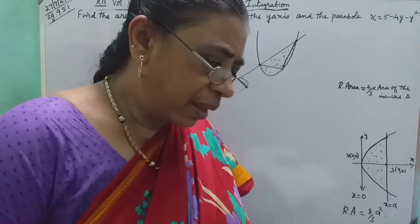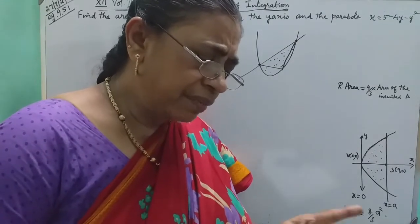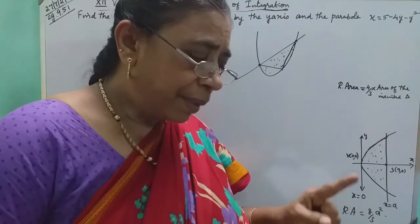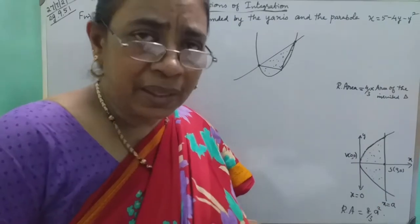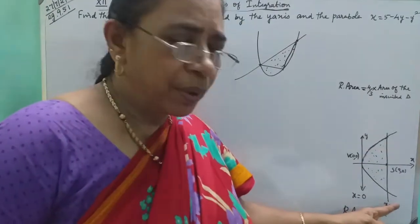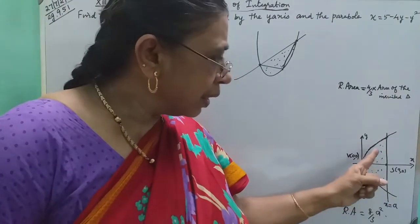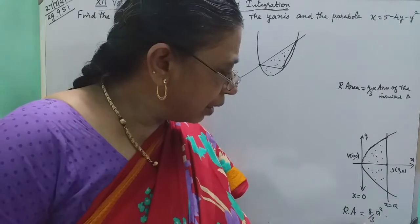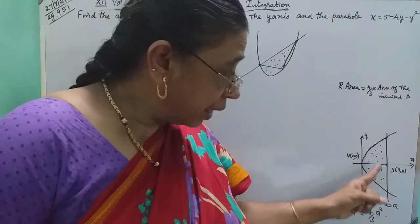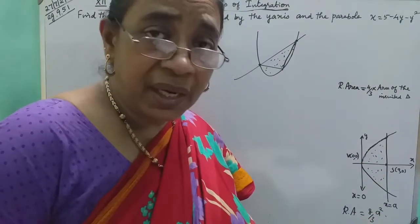Example 9.50: Find the area of the region bounded between the parabola and the latus rectum. The parabola opens rightward, and the area at the end is 8 by 3 square units.